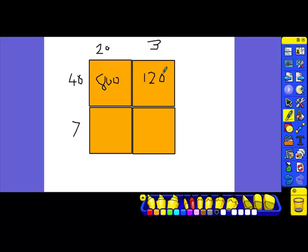We multiply 7 by 20, 140. And then finally 7 by 3 is 21. And then the idea is just to add those numbers up together. So 800 plus 120 is 920. 920 plus 140 is 1060. 1060 plus 21 is 1081.